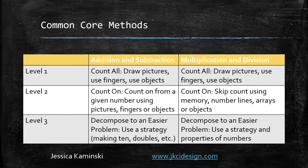Level two is where Common Core says we want to make sure we're pushing every student. In addition and subtraction, students are counting on from a given number. So if you're trying to find five plus seven, you put down five cubes and count seven more starting from five, as opposed to level one where a student puts down five, puts down seven, and counts from one to find there's twelve. At level two, they're able to hold a number in their head and move on in the counting sequence. In multiplication and division, that's skip counting — students who can say 2, 4, 6 or 5, 10, 15.